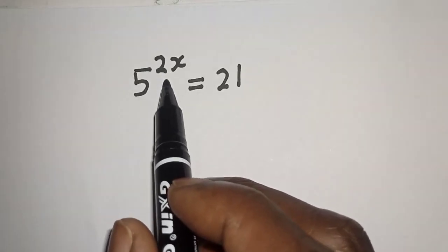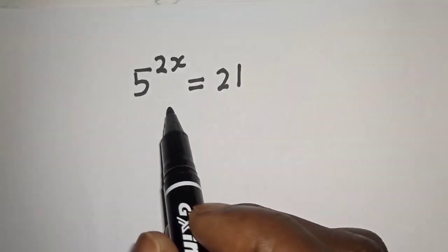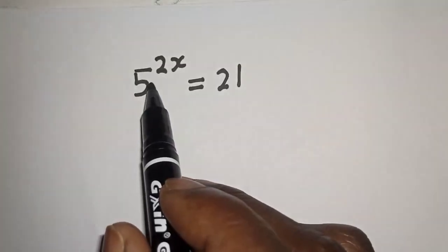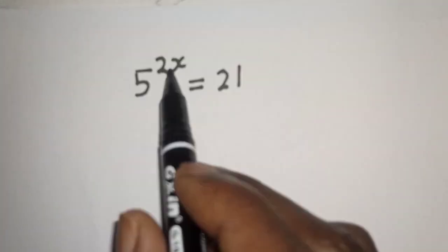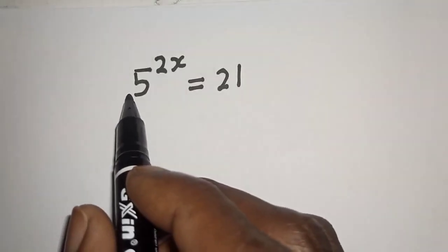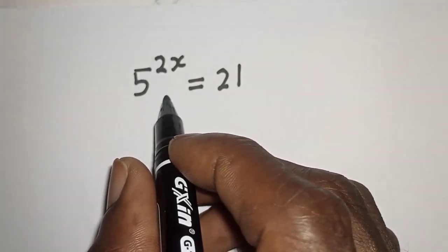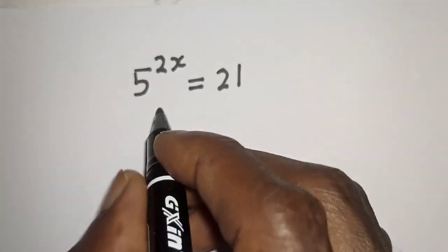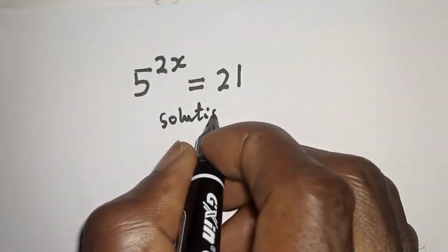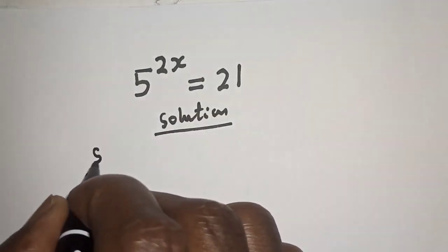5 raised to power 2x is equal to 21. What is the value of x? Welcome to my class. In this class we want to find the value of x from this equation: 5 raised to power 2x is equal to 21. We are going to solve this in three different ways. But before we proceed, please don't forget to like, share, comment and subscribe.